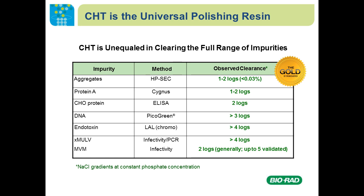CHT really is the universal polishing resin. Most impurities found in a process feed stream show strong clearances. Protein A, DNA, endotoxin, and retroviruses generally show high clearances no matter how you develop the process.